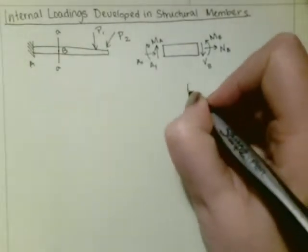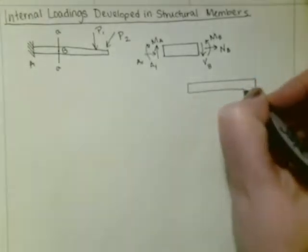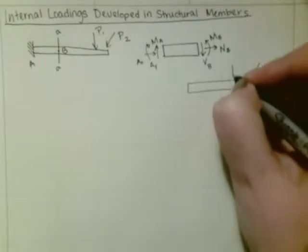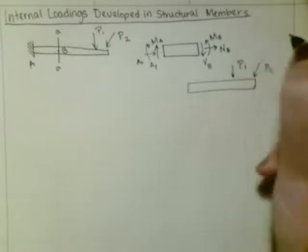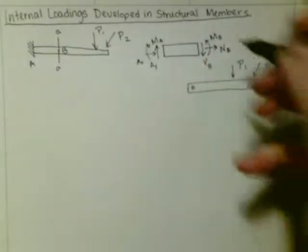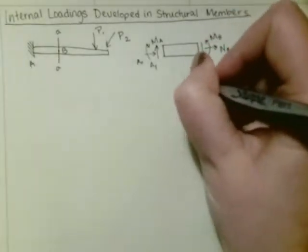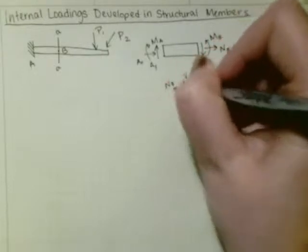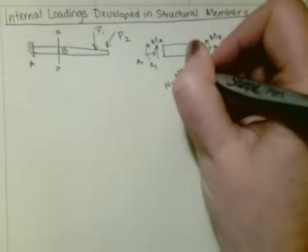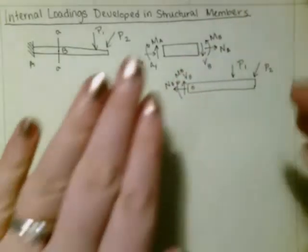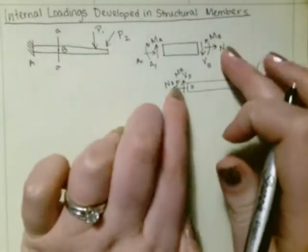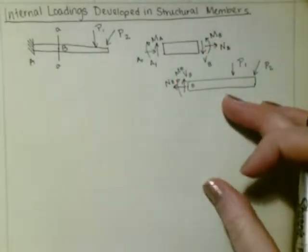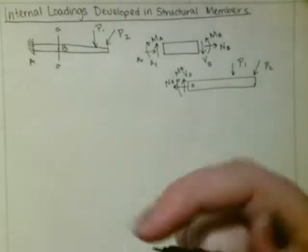Then we can draw the other side of the beam as well. We've got P2 and P1, and then at point B we've got our shear force, our normal force, and our bending moment, such that each segment is in equilibrium.